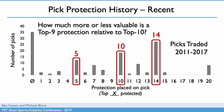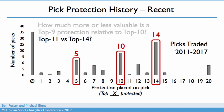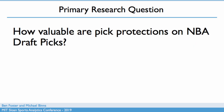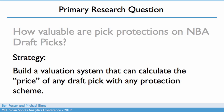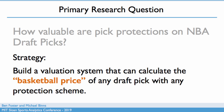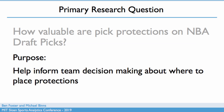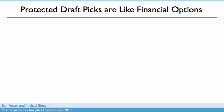We thought about whether we could come up with a way to calculate the value or the difference between, say, a top nine versus a top 10 protection, or top 11 versus top 14. This motivates our primary research question: how valuable are pick protections on NBA draft picks? Our strategy for answering this is to build a system that can systematically value draft picks with any protection scheme — we call this a price, and it's a basketball price, not monetary. Our purpose is to help inform team decision-making about where you might place protections when trading a pick away or trading for one.